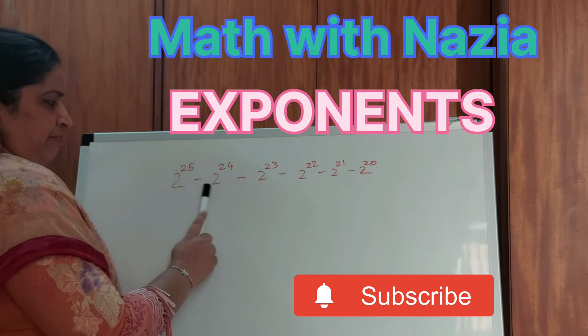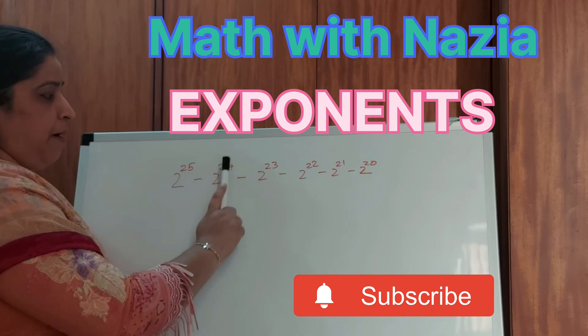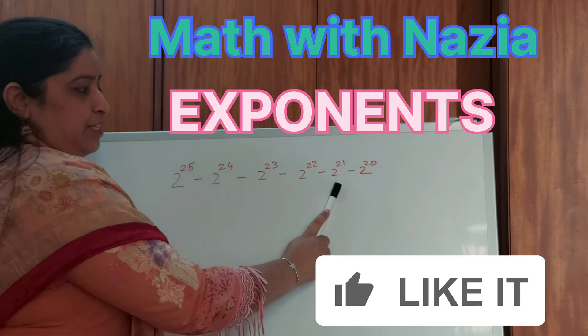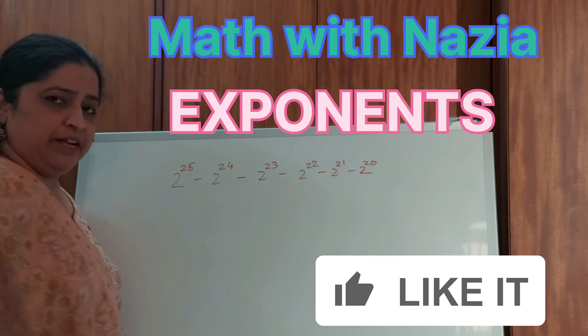We have 2 to the power of 25 minus 2 to the power of 24 minus 2 to the power of 23 minus 2 to the power of 22 minus 2 to the power of 21 and minus 2 to the power of 20.